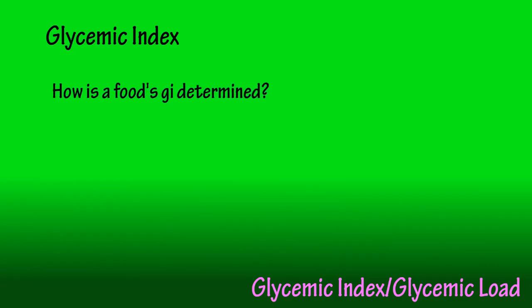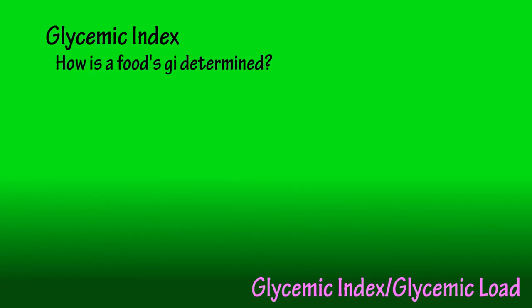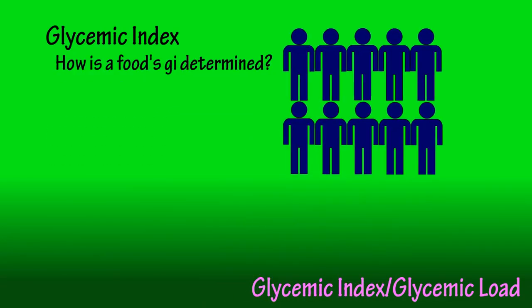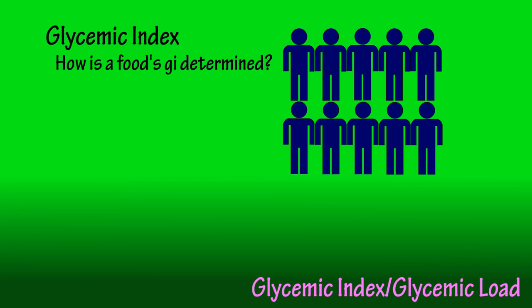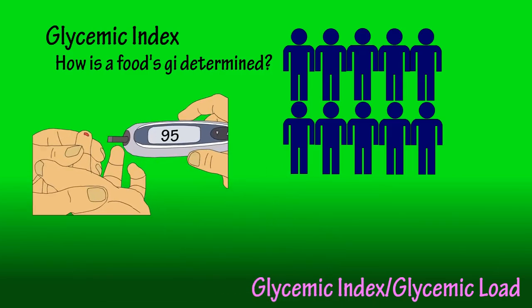How is a food's glycemic index value determined? After an overnight fast, a group of 10 people are given a serving of a food item. This serving contains 50 grams of available carbohydrates — available carbohydrates does not include the fiber content. After the food has been consumed, blood sugar levels are measured every 15 to 30 minutes over a two-hour period.